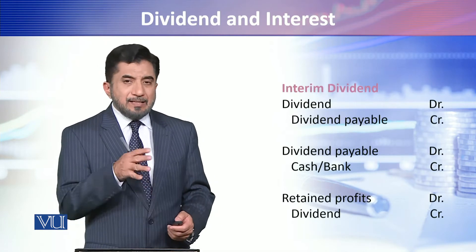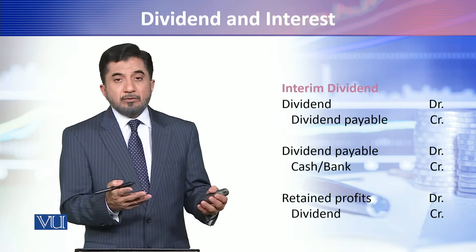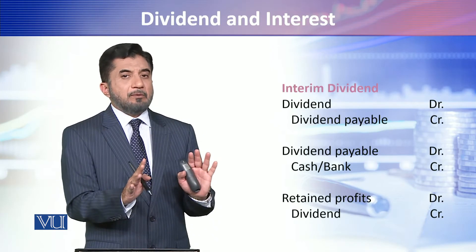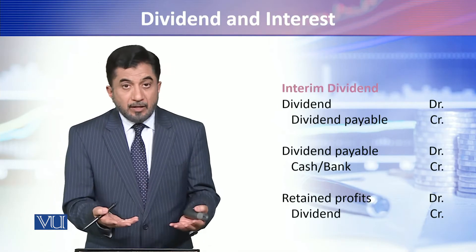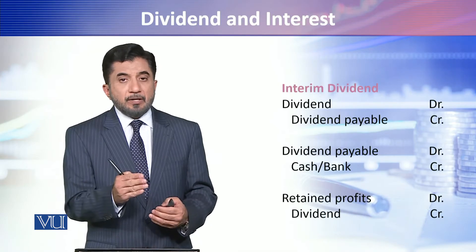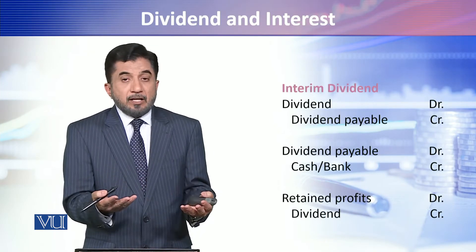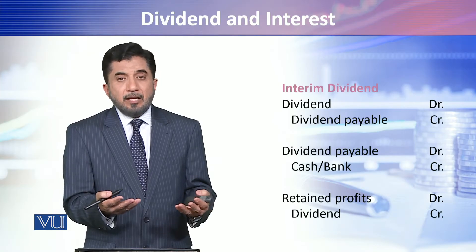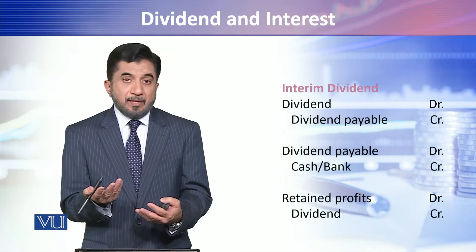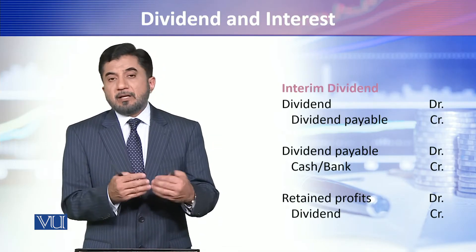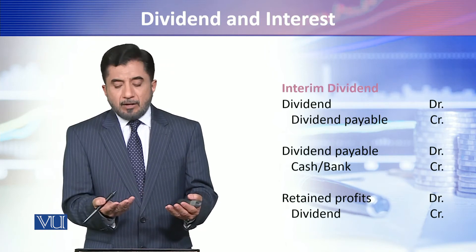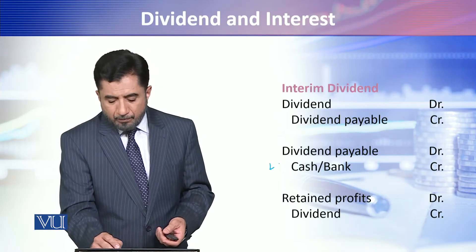Interim dividend की accounting देखिएगा — dividend को debit करके dividend payable liability बना दी जाएगी, क्योंकि ये आपने during the year dividend declare किया और end of reporting period से पहले आपकी obligation है कि आपने उसको pay करना है। अगर pay नहीं करेंगे तो उस date पे एक obligation रहेगी जो current liability में नज़र आएगी। इसलिए dividend payable एक liability बना देते हैं और फिर dividend payable को debit करके bank account credit कर देते हैं — वो dividend pay हो गया।